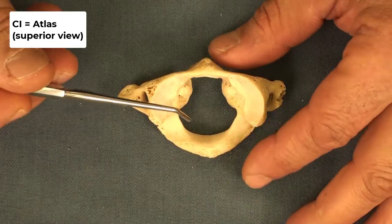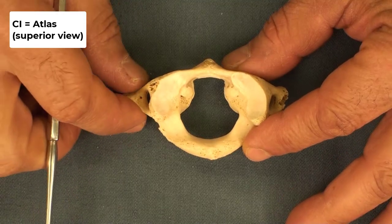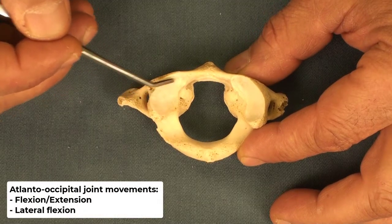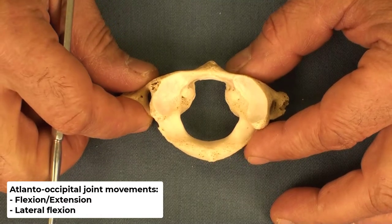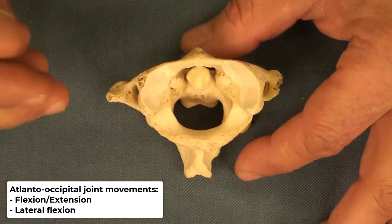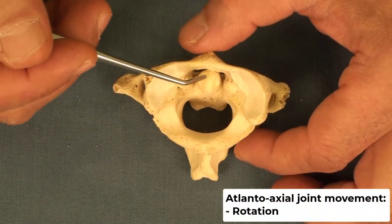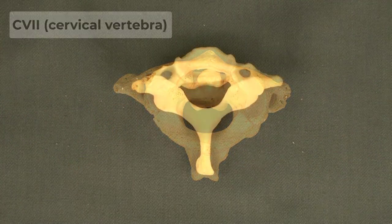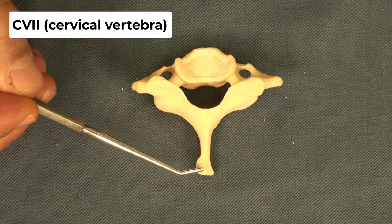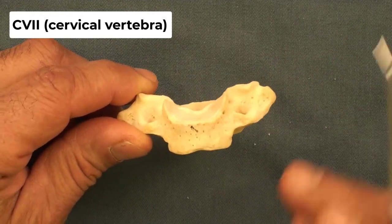The condyles of the occipital bone articulate with the superior aspect of the lateral masses of the atlas — that joint is known as the atlanto-occipital joint, where we have flexion, extension, and lateral flexion. When the atlas articulates with the axis, the head with the atlas turns around the dens, giving us rotational movements at the atlanto-axial joint. Looking at the 7th cervical vertebra, the spinous process is not bifurcated, and we have uncinate processes on each side of the superior aspect of the body.